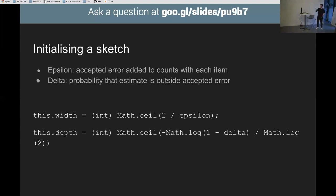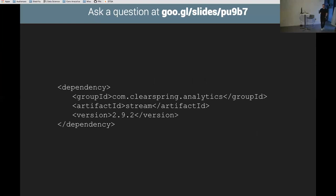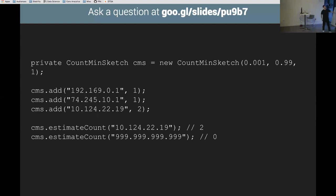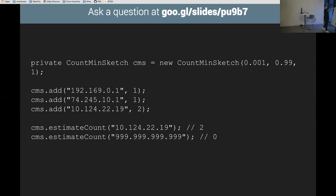There's a ClearSpring Analytics stream library written by folks who built a business adding share/like buttons to blog posts — they had to count very large numbers of things, so they open-sourced their probabilistic data structures. You create a new CountMinSketch with three parameters: epsilon, delta, and a random seed for reproducibility. Then add elements with add(item, count), and call estimateCount() — it returns the estimated count, or zero for unseen items.